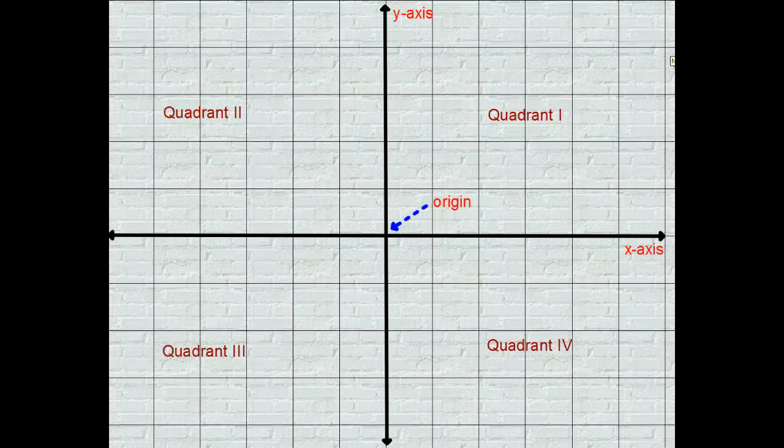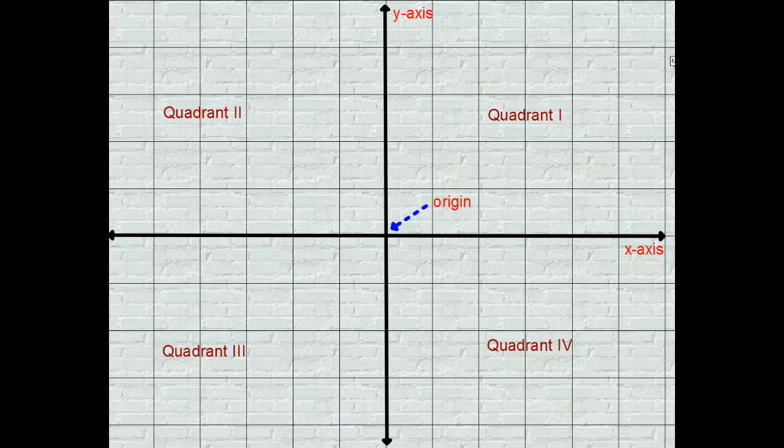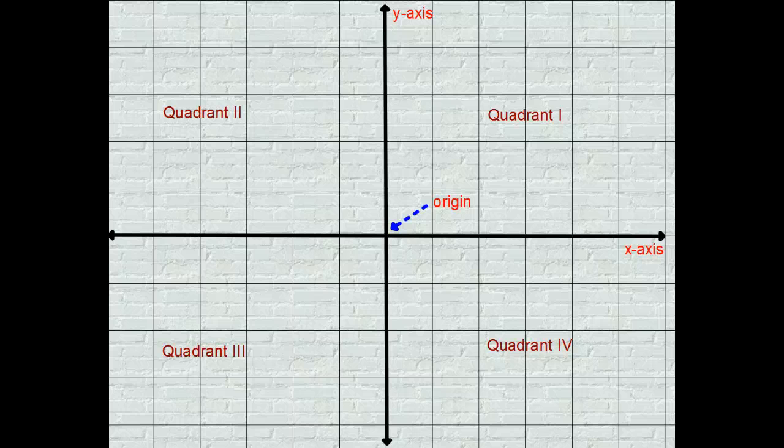I have the coordinate plane right here on this screen and it is broken into four separate parts. And what are the lines that separate this grid into four parts? We're going to start with the two axes.